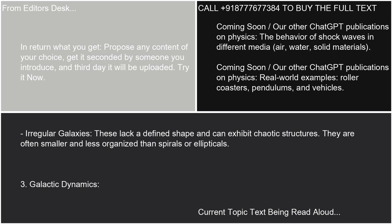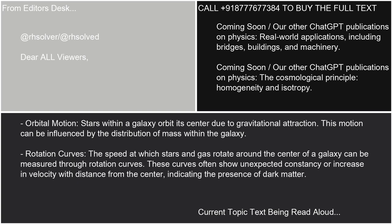3. Galactic dynamics. Orbital motion: stars within a galaxy orbit its center due to gravitational attraction, influenced by the distribution of mass within the galaxy. Rotation curves measure the speed at which stars and gas rotate around the center of a galaxy. These curves often show unexpected constancy or increase in velocity with distance from the center, indicating the presence of dark matter.